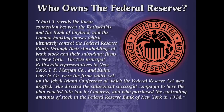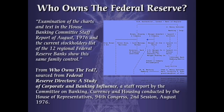This is an excerpt of a document commissioned by the House of Representatives that tried to track who owned the Federal Reserve System, because it's not a governmental institution — it's a private banking cartel. It says: "Chart 1 reveals the linear connection between the Rothschilds and the Bank of England and the London Banking Houses, which ultimately control the Federal Reserve Banks through their stock holdings of bank stock and their subsidiary firms in New York. The two principal Rothschild representatives in New York, J.P. Morgan and Kuhn Loeb & Company, were the firms which set up the Jekyll Island Conference at which the Federal Reserve Act was drafted." We have been under the control of this central bank, which has devalued the currency of the United States for over 100 years now.